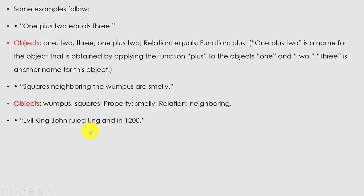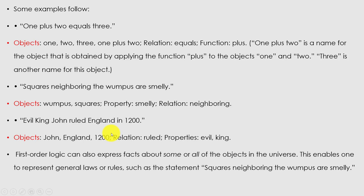Next example: 'Evil King John ruled England in 1200.' Here we can differentiate what are the objects, what is the relation, and what are the properties. First-order logic can also express statements about some or all of the objects in the universe. This enables one to represent general laws or rules, such as 'squares neighboring the wumpuses are smelly.'